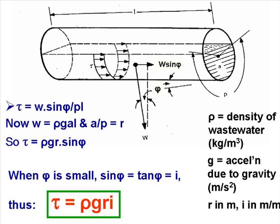We also know from basic trigonometry that when φ is small, sine φ is equal to tan φ, and tan φ, for small values of φ, equals i. So therefore, τ equals ρgri.